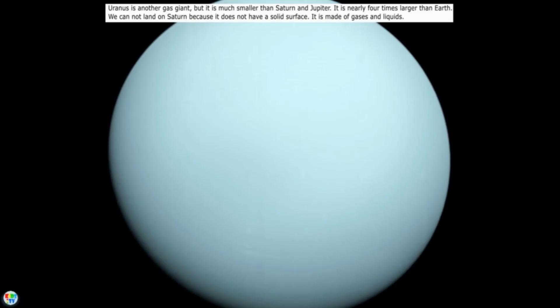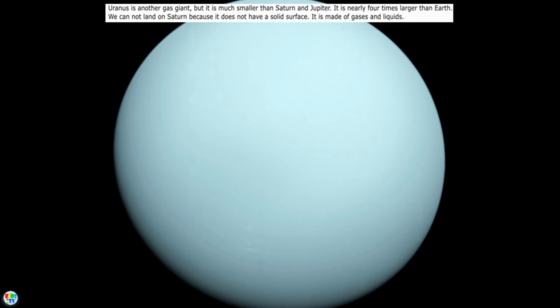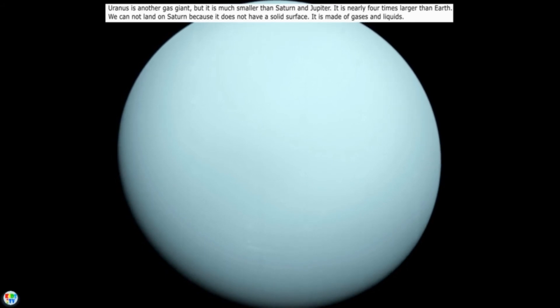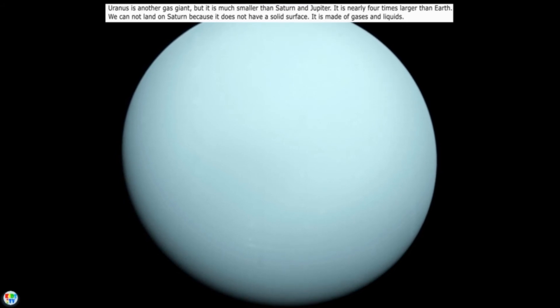Uranus, the seventh planet from the Sun. Uranus is another gas giant but it is much smaller than Saturn and Jupiter. It is nearly four times larger than Earth. We cannot land on Uranus because it does not have a solid surface. It is made of gases and liquids.